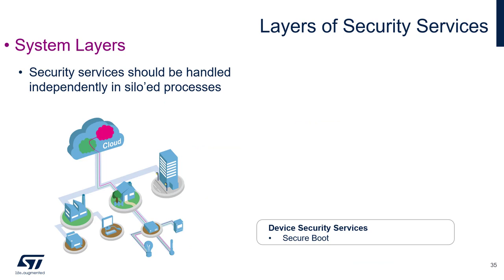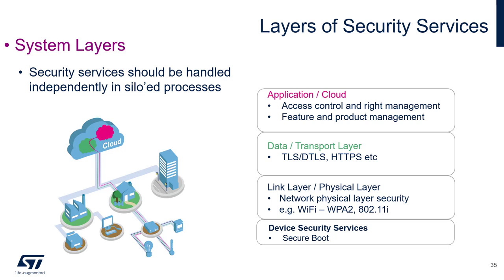Within any system, there are layers of functionality. Each layer has its own security processes, not necessarily relying on the capabilities of any other layer to protect its services or functionality. We see here an example of a layered system providing different services on each layer. To prevent a flaw in one layer's security being used to exploit another layer, these services should ideally be handled independently and siloed into different processing threads. For example, if your Wi-Fi password were to be discovered, your home surveillance cameras would not be open to a hacker, as their secure communications did not rely on Wi-Fi being secure.